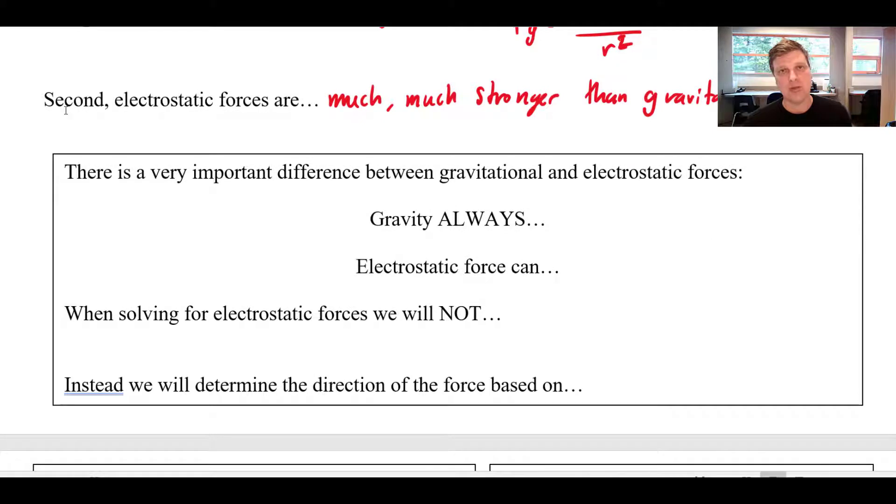So a quick difference between gravitational and electrostatic force is that obviously gravity always attracts things. So gravity is always an attracting force. Electrostatic forces can attract or repel depending on the situation. If we have two like charges, that's going to create a repulsion. Two opposite charges, that's going to be an attraction.